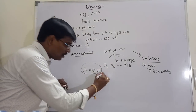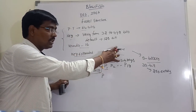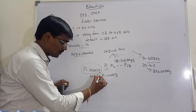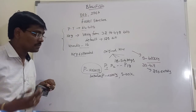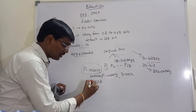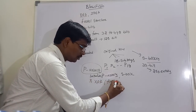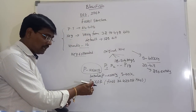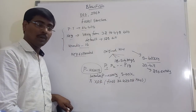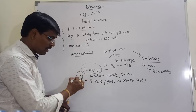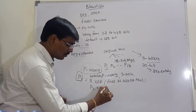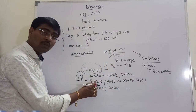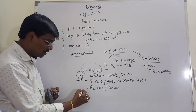The procedure for expanding the key is: first, initialize the P-arrays and S-boxes with some null values. Then, P1 is XORed with the first 32 bits of the key to get the new P1. Similarly, P2 is XORed with the second 32 bits of the key, and so on, until we get P18.